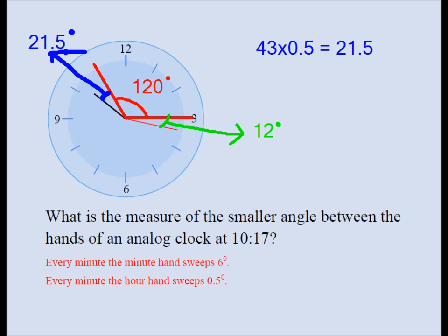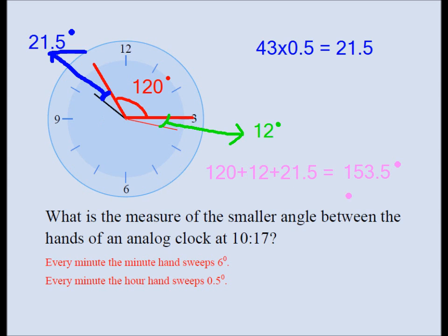Our final answer is the blue angle plus the red angle plus the green angle: 120 plus 12 plus 21.5, which equals 153.5 degrees. Let me check the math: 120 plus 12 is 132, plus 21.5 is 153.5. That's correct. So the smaller angle between the hands of the analog clock at 10:17, or 17 minutes past 10, is exactly 153.5 degrees.